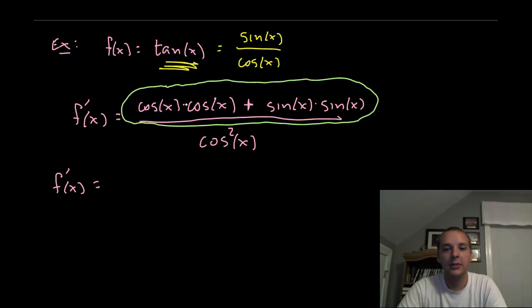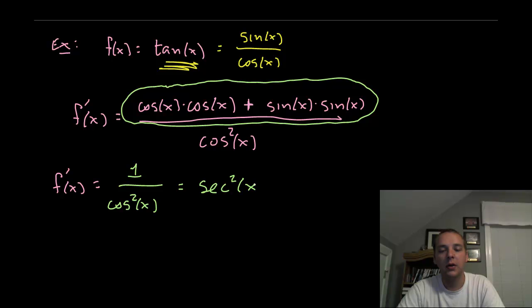If you know your trig identities, this should jump out as cosine squared plus sine squared, which we know is 1. There's a trig identity that says sine squared plus cosine squared equals 1, divided by cosine squared X. And there's another name for 1 over cosine: secant. So this would be secant squared X.